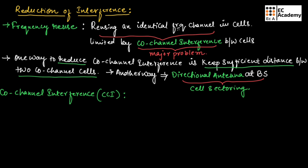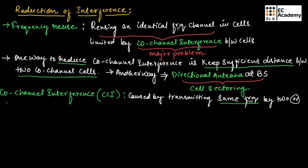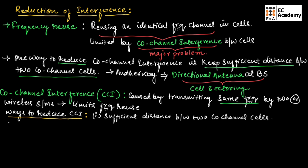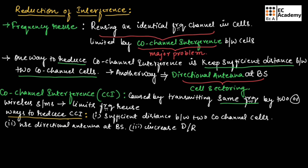Let us see what is co-channel interference. Co-channel interference is caused by transmitting the same frequency by two or more wireless systems, and that limits the frequency reuse. There are different ways to reduce co-channel interference. The first way is to use sufficient distance between two co-channel cells. The second way is to use a directional antenna at the base station. And the third way is to increase the ratio D by R.